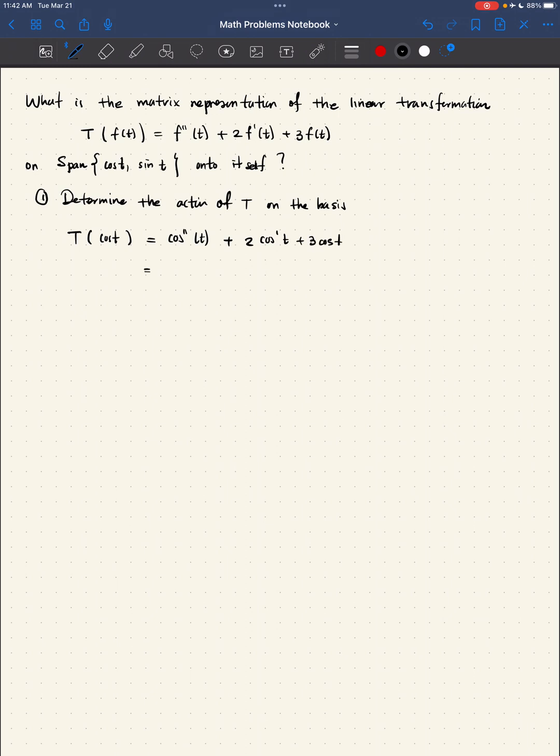Well, what is that? Let's see. The derivative of cosine is negative sine and the second derivative of cosine is the derivative of negative sine, which is just negative cosine.